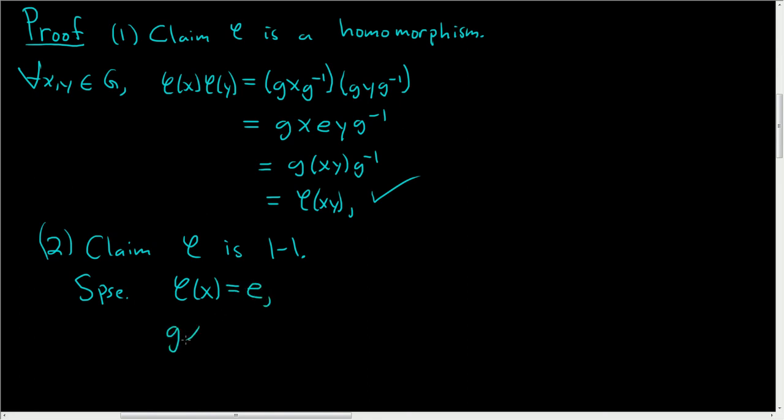So this means that gxg⁻¹ is equal to the identity element. If we multiply both sides on the right by g, we get gx equals eg, and eg is simply g. So we have gx equals g.